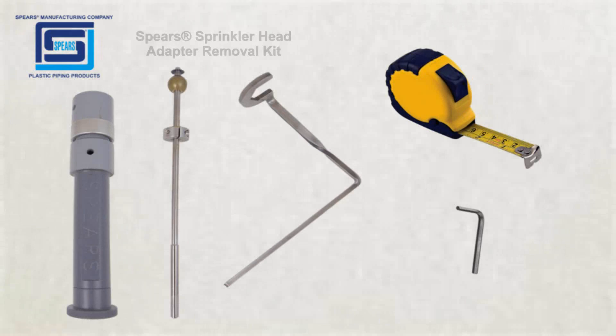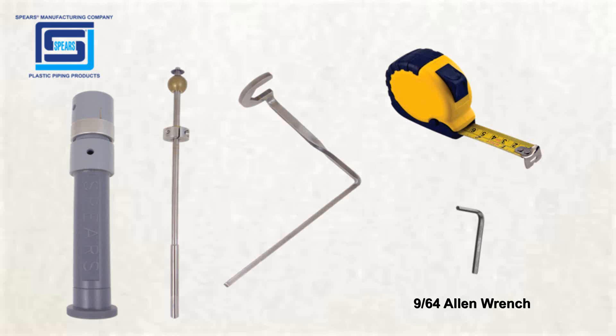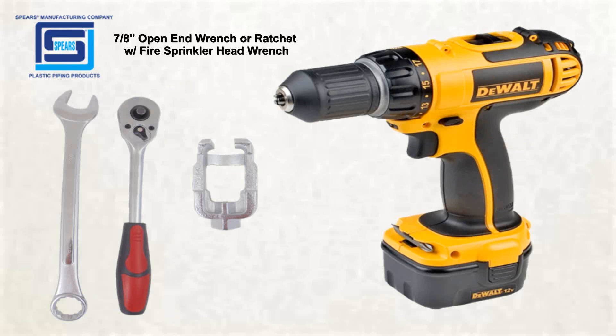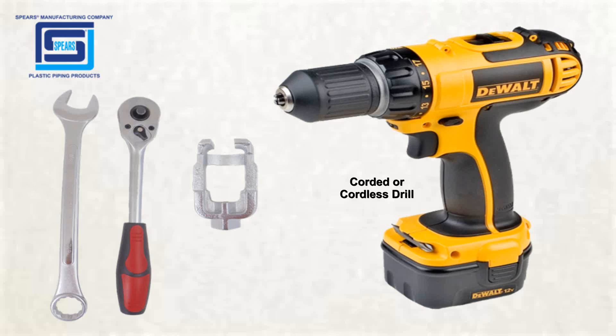For this procedure the tools that you will need are the Spears Sprinkler Head Adapter Removal Kit which includes a deburring tool, an inside pipe cutter, and a head adapter backup wrench. You will also need a tape measure, a 9/64 Allen wrench, a 7/8 inch open end wrench or a ratchet with a fire sprinkler head wrench, and either a corded or cordless drill.